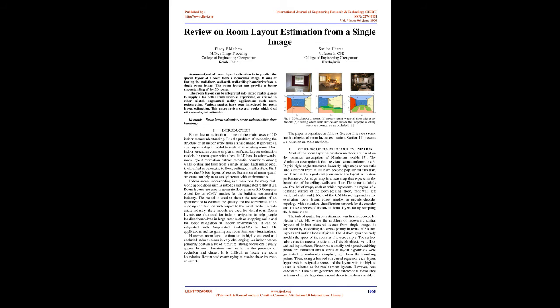An edge map is a heat map that represents the boundaries of the ceiling, walls, and floor. The semantic labels are five belief maps, each of which represents the region of a semantic surface of the room: ceiling, floor, front wall, left wall, and right wall. Most CNN-based approaches for estimating room layout edges employ an encoder-decoder topology with a standard classification network for the encoder and utilize a series of deconvolutional layers for up-sampling the feature maps.